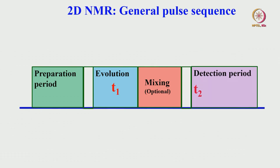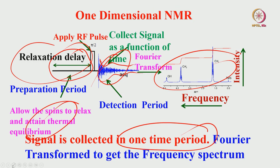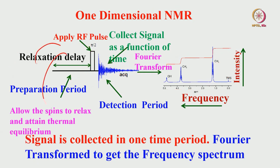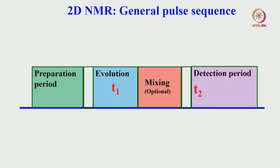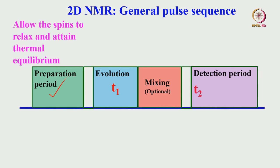Then, what is a 2D NMR? A general pulse sequence for 2D NMR has a preparation period and a detection period, just as in 1D NMR — but now we also have an evolution period T1, a detection period T2, and optionally a mixing period in between. After the preparation period, a pulse P1 is applied — some 90-degree or other angle RF pulse. Then the spins are allowed to evolve with time after the 90-degree pulse, undergoing free precession because of chemical shift and J-coupling.